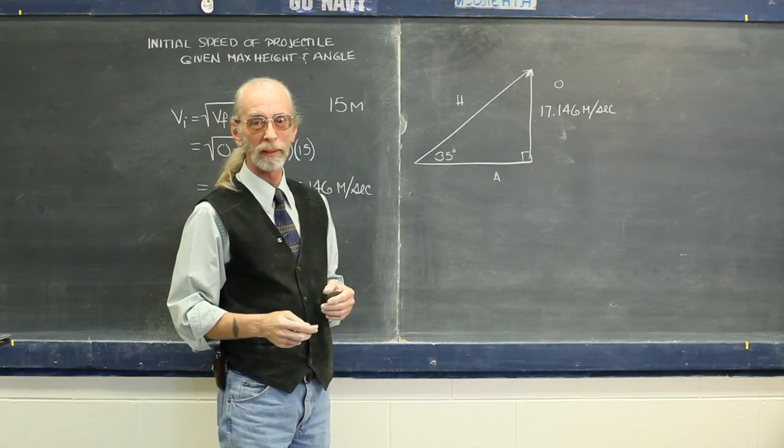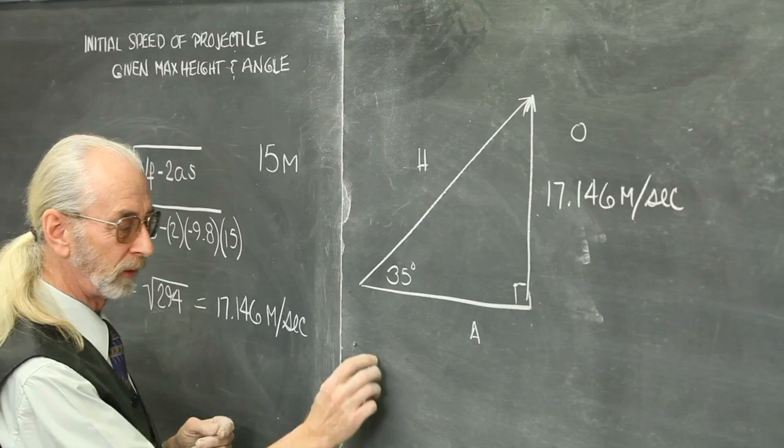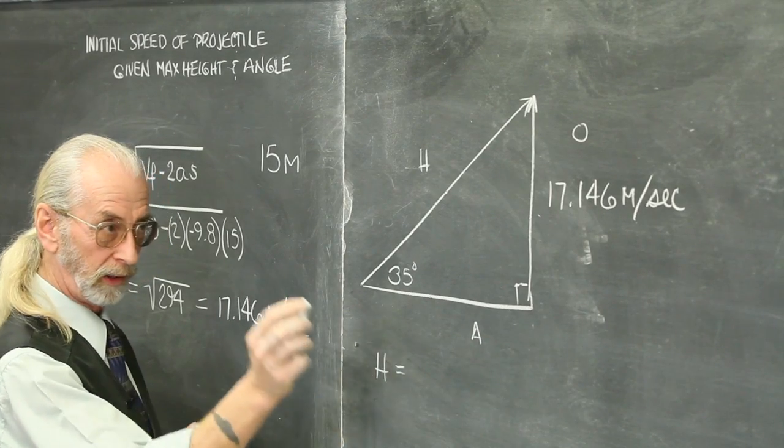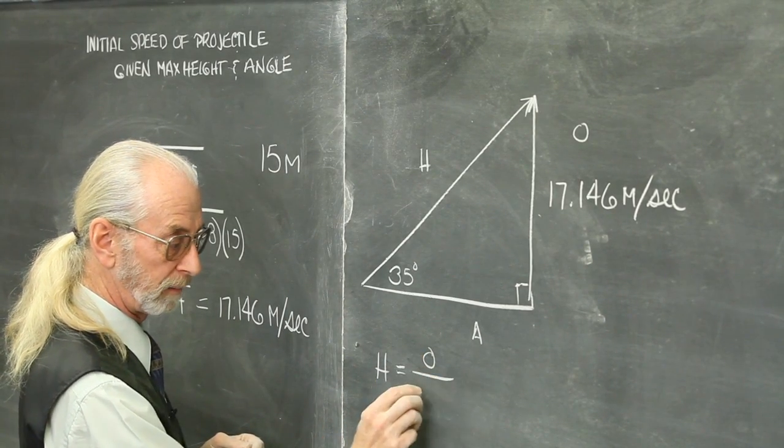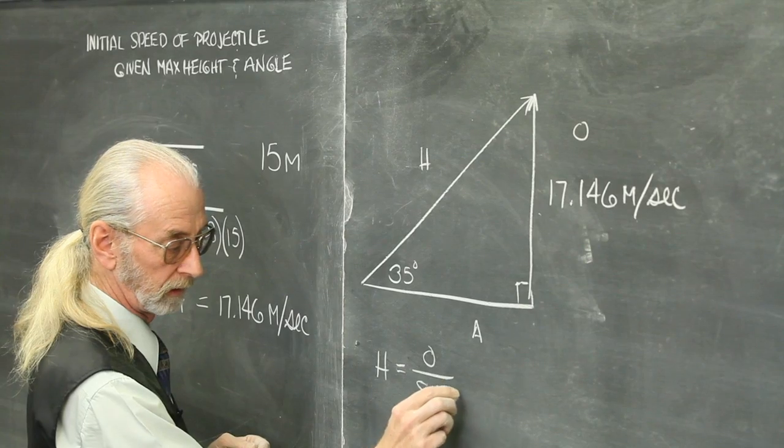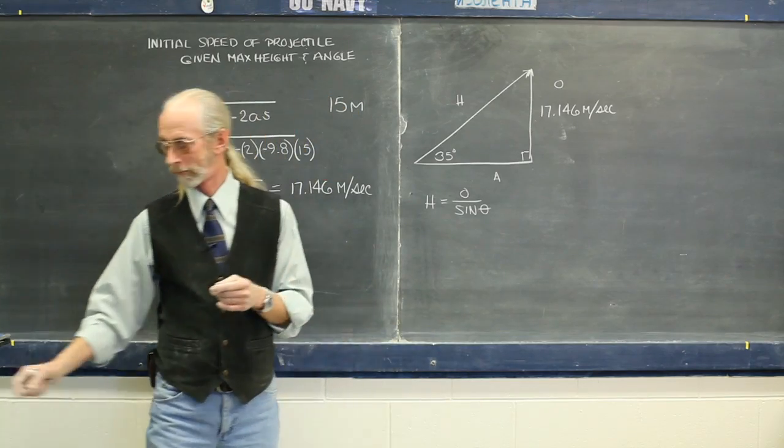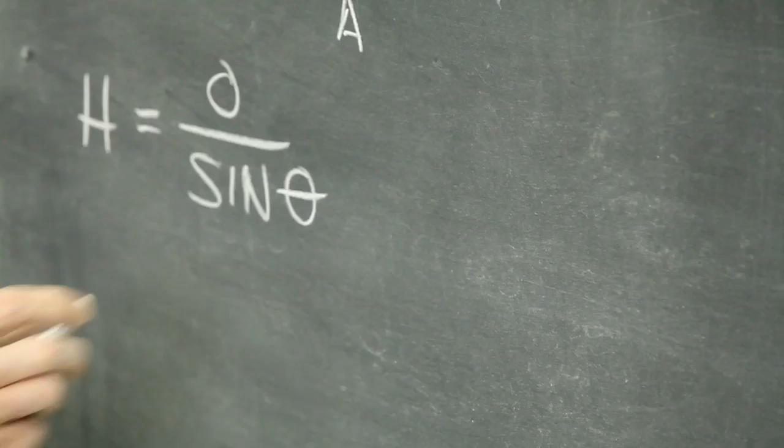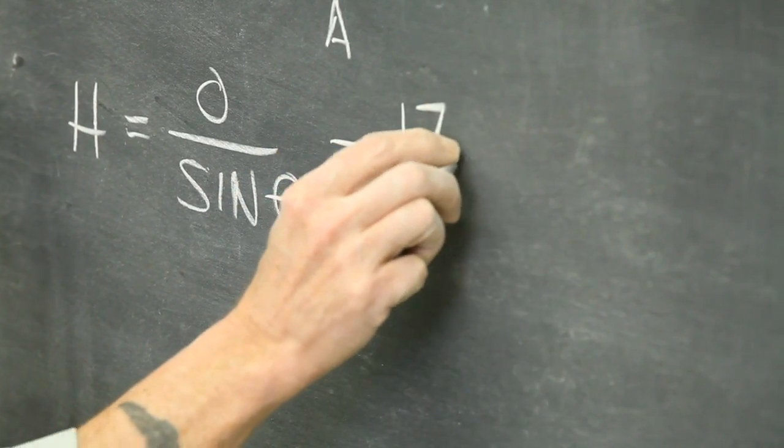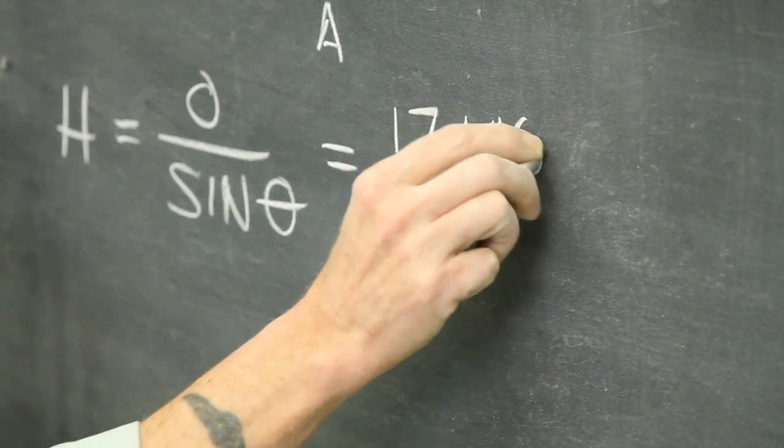Remember your trigonometry, SOHCAHTOA, hypotenuse equals opposite divided by the sine of the angle. So that's going to be 17.146